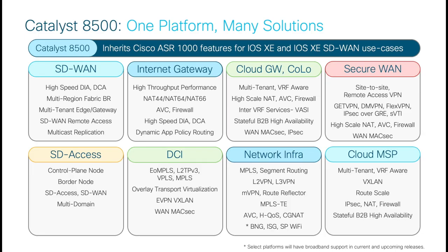The Catalyst 8500 series edge platforms inherit all the feature richness of the ASR1000 platforms for both non-SD-WAN and SD-WAN use cases. Fundamental functions like Internet Gateway and DCI, through to innovative cloud gateway and co-location deployment scenarios, are fully supported. Modern network infrastructure such as MPLS, EVPN, and segment routing are supported as well.